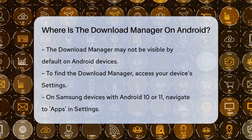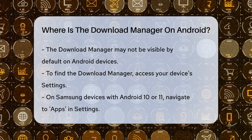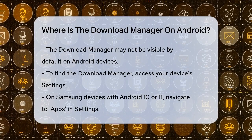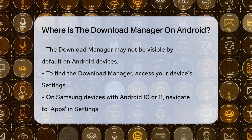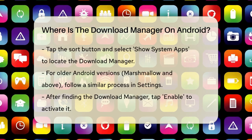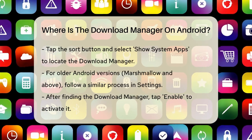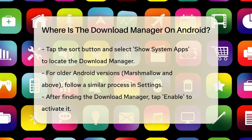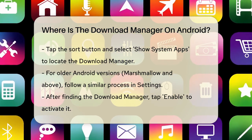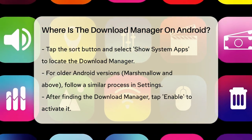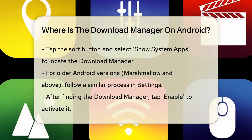Here's how you can enable it, depending on your Android version. If you're using a Samsung smartphone with Android OS version 10 or 11, you need to go to your settings, then tap on Apps. Next, tap the Sort button and select Show System Apps. From there, search for Download Manager and tap on Enable.